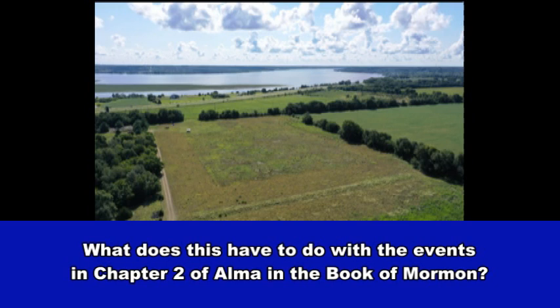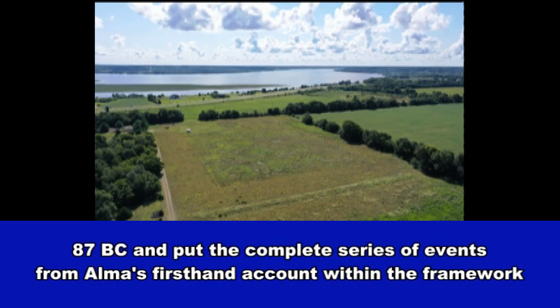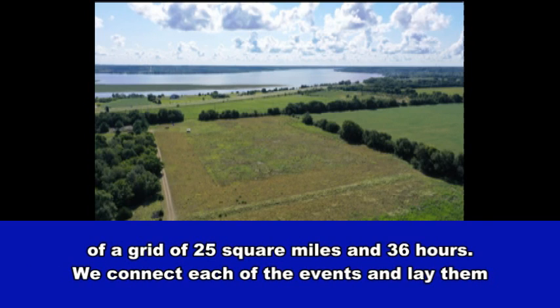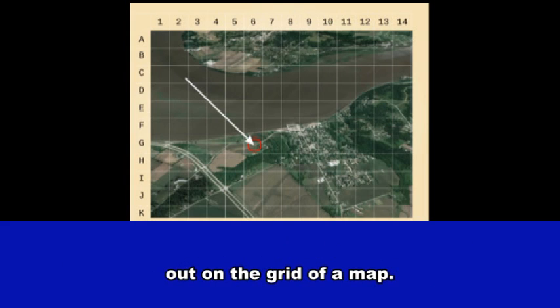What does this have to do with the events in Chapter 2 of Alma in the Book of Mormon? It is possible to take all the details concerning the Battle of Zarahemla at harvest time in 87 BC and put the complete series of events from Alma's first-hand account within the framework of a grid of 25 square miles in 36 hours. We connect each of the events and lay them out on the grid of a map.